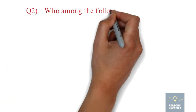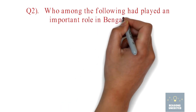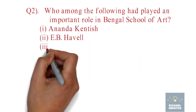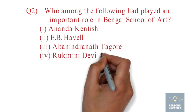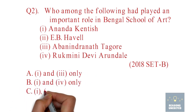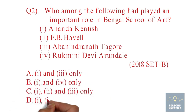Question number 2. Who among the following had played an important role in the Bengal School of Art? 1. Ananda Kentish. 2. E.B. Havel. 3. Rabindranath Tagore. 4. Rukmini Devi Arundel. Option A: Only 1-3. Option B: Only 1-4. Option C: Only 1-2-3. Option D: All 1-2-3-4. The correct answer is Option C, Only 1-2-3.